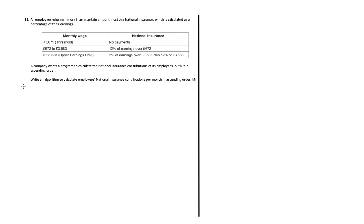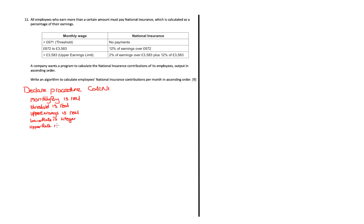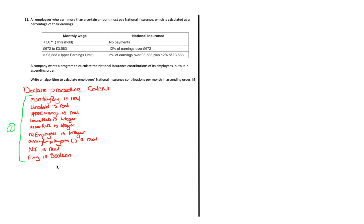A common mistake students made was not specifying the final result in ascending order. Declaring our procedure — I've called mine `calc_ni` for calculating national insurance. I've got a range of variables: monthly pay as a real, threshold as a real, upper earnings as a real, lower rate as an integer, upper rate as an integer, number of employees as an integer, employees as an array, and national insurance as a real and a flag as a boolean. Note that the exam board mark scheme has some errors in variable declarations — I'll adjust as I go.